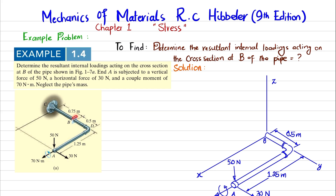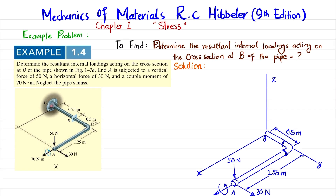We have to determine the internal loading at point B. For that, we will section the pipe and draw the free body diagram. When you section it at point B, you get two sections. We have taken the segment AB, so we do not need to calculate the reaction at C. Let's start with the solution.